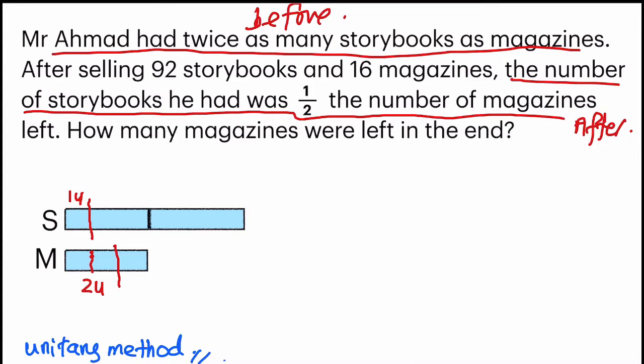Now the next part of this step is to add in the numbers. Since he sold 92 storybooks, 92 would be on top. And the bottom one would be 16 magazines. Okay, we are done here.